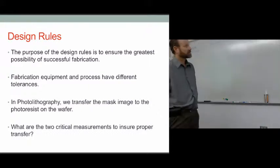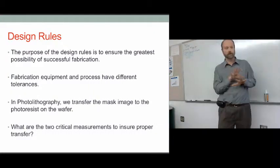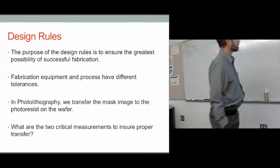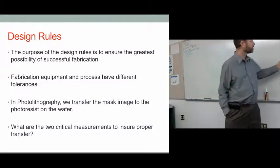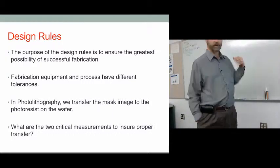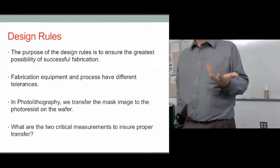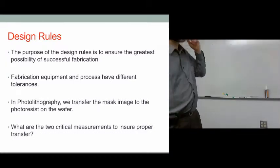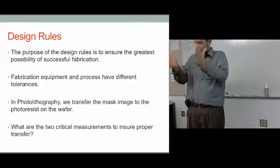The fabrication equipment and process has different tolerances. You might be overlaying two layers with each other, and the equipment has a little bit of slop to it — every piece of equipment does. That's why we build in these tolerances. In photolithography, we transfer a mask image to the photoresist on the wafer. We have a mask, which is our design created on the computer, and we use that mask to image the wafer — either one-to-one as in our clean room, or using a stepper and a reduction where we start with a bigger mask and demagnify it down onto the wafer.